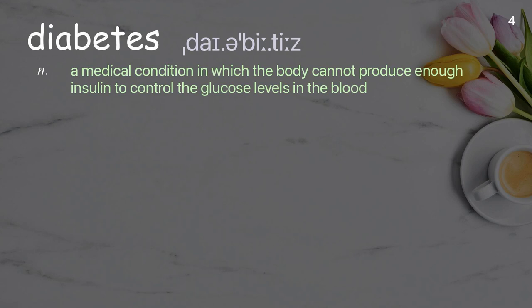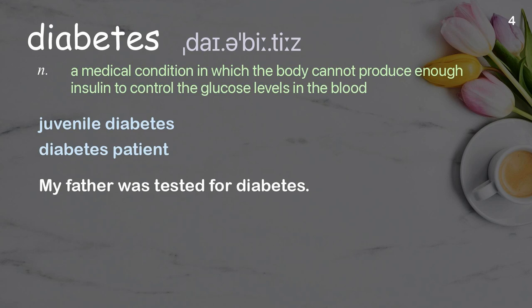Diabetes: a medical condition in which the body cannot produce enough insulin to control the glucose levels in the blood. Examples: juvenile diabetes, diabetes patient.